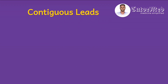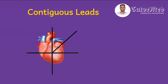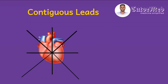Let's look at the limb leads. Draw the heart however you want, then draw a horizontal line through it and a vertical line — you've drawn the four cardinal points: north, east, south, and west. Draw diagonal lines on the left and right. Beginning from the upper left, place AVL, then the augmented voltage lead, then lead one, then lead two, and at the bottom, AVF.